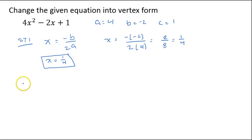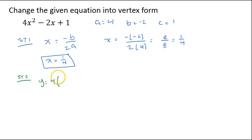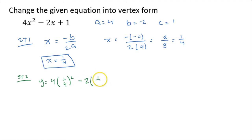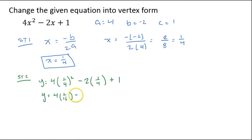For step 2, I'm going to find my vertex. I know my axis of symmetry is x = 1/4, so all I have to do is plug that into my original function to find the y value. So I write y = 4×(1/4)² - 2×(1/4) + 1. When we have a fraction, we square the numerator and square the denominator, giving us 4×(1/16) - 2×(1/4) + 1.